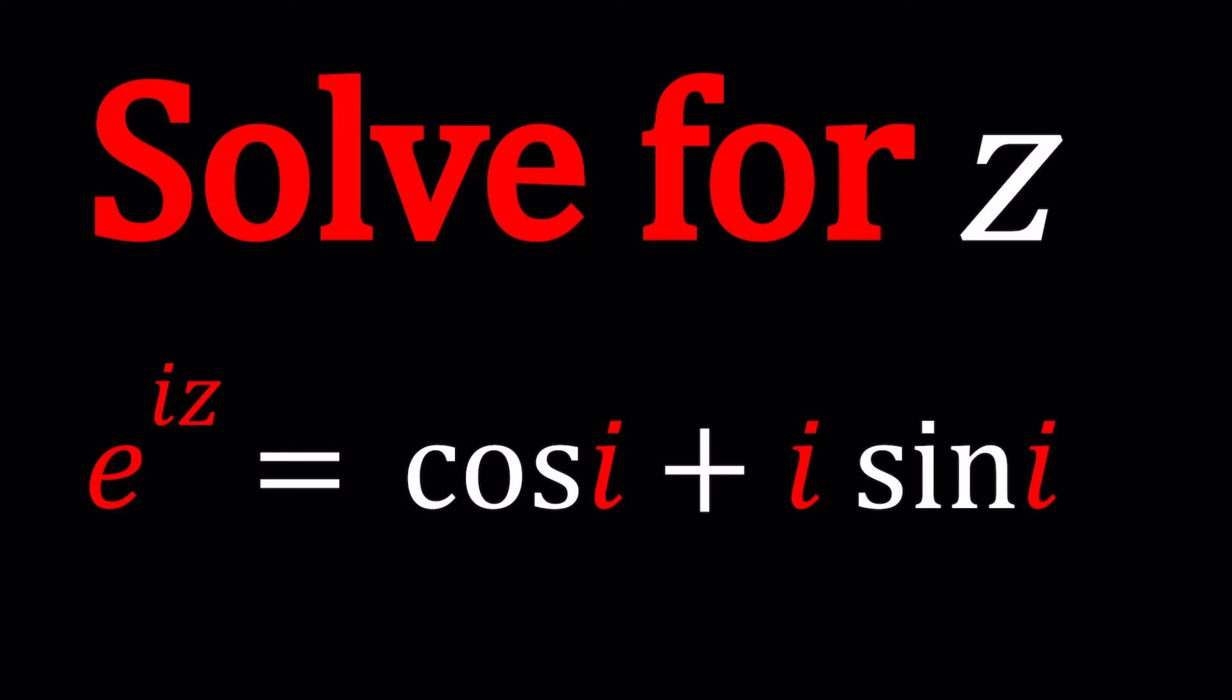We have e to the power iz equals cosine i plus i sine i. It's actually very imaginary I should say, because of the presence of i in so many places. And I will be presenting two methods. First when I thought about this problem I was like I don't think there's two ways to do it, but then I kind of figured it out. Hopefully you will let me know which method you like better in the comment section down below.